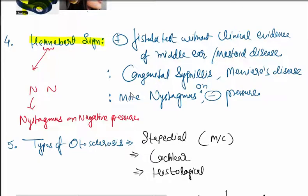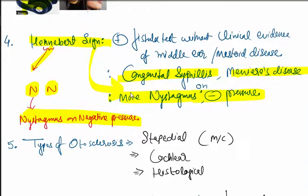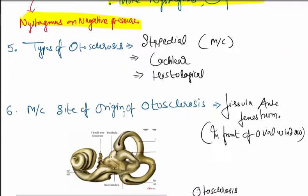Next, Hennebert sign has two N's - nystagmus on negative pressure. This shows positive fistula test without clinical evidence of middle ear or mastoid disease. Can be seen in congenital syphilis and Meniere's disease. There is more nystagmus on negative pressure.